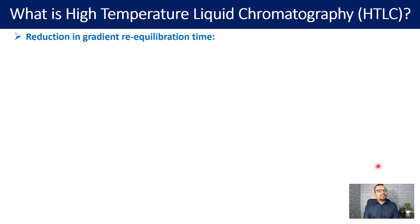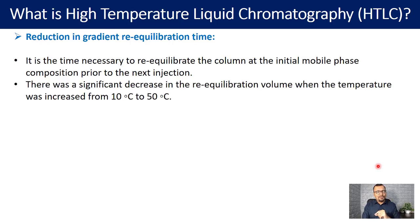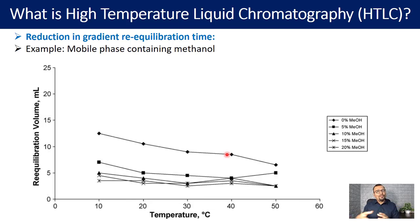Another important point is the reduction in gradient re-equilibration time. In case you are using a gradient run for your chromatographic separation, re-equilibration always brings a loss of time and efficiency. Temperature can certainly help reduce this re-equilibration time. For example, with a mobile phase containing acetonitrile, temperature has helped in reducing re-equilibration time. Similarly, in the case of methanol, there is also some reduction in re-equilibration time.